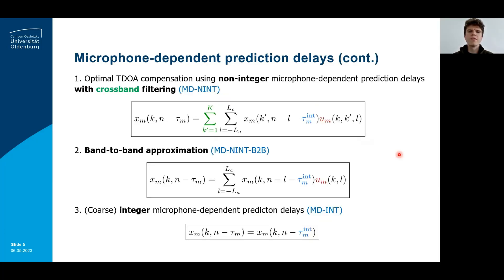We propose three different methods to implement the microphone-dependent prediction delays tau_m. In the first method, we perform optimal TDOA compensation using non-integer microphone-dependent prediction delays with cross-band filtering, where the cross-band filters are implemented across all cross-bands k-dash. However, due to the high computational complexity of cross-band filtering, we also propose a band-to-band approximation by only considering the filtering operations in each sub-band k for the cross-band filters. As a further approximation, we perform coarser TDOA compensation using integer microphone-dependent prediction delays by neglecting the cross-band filters entirely.